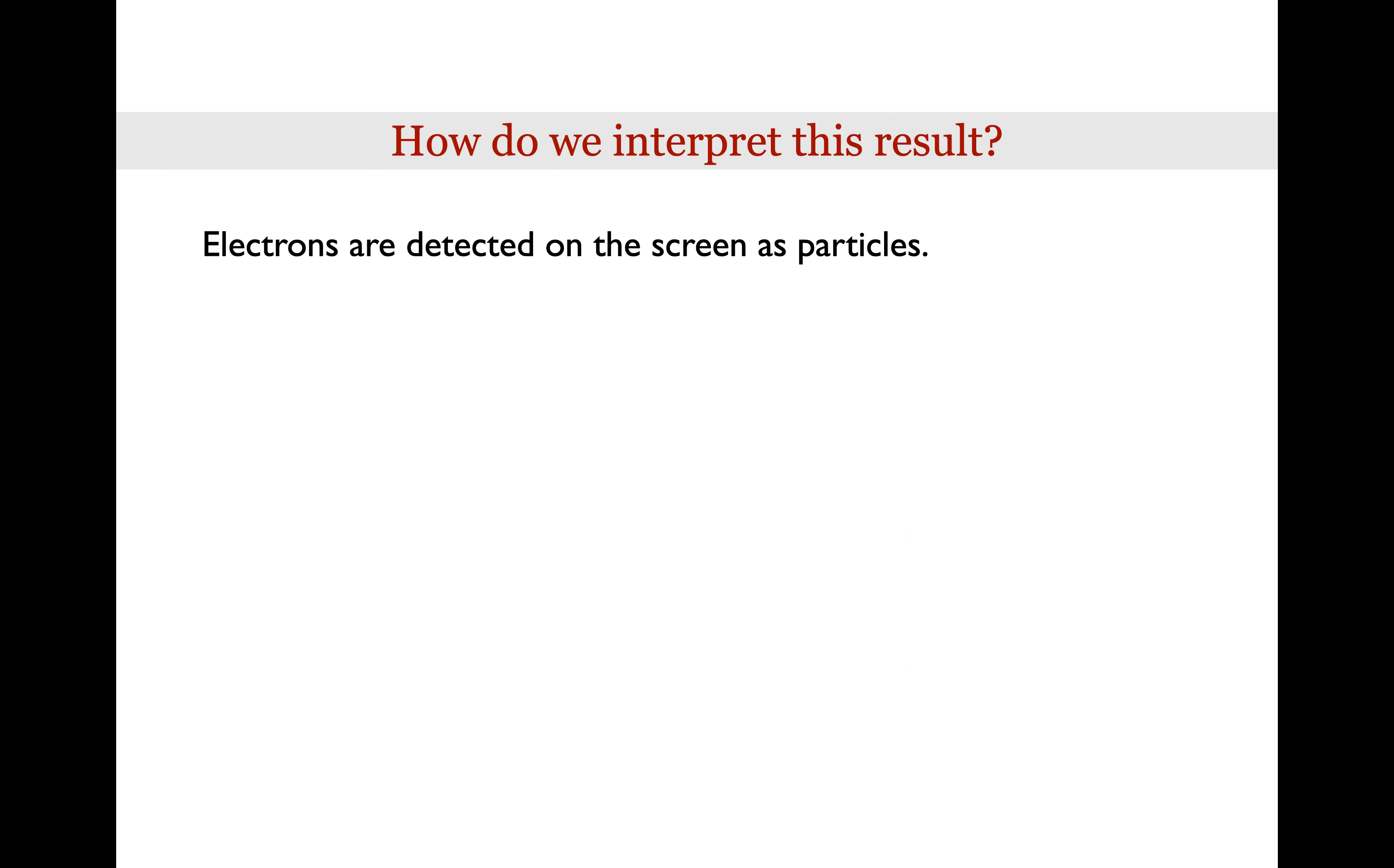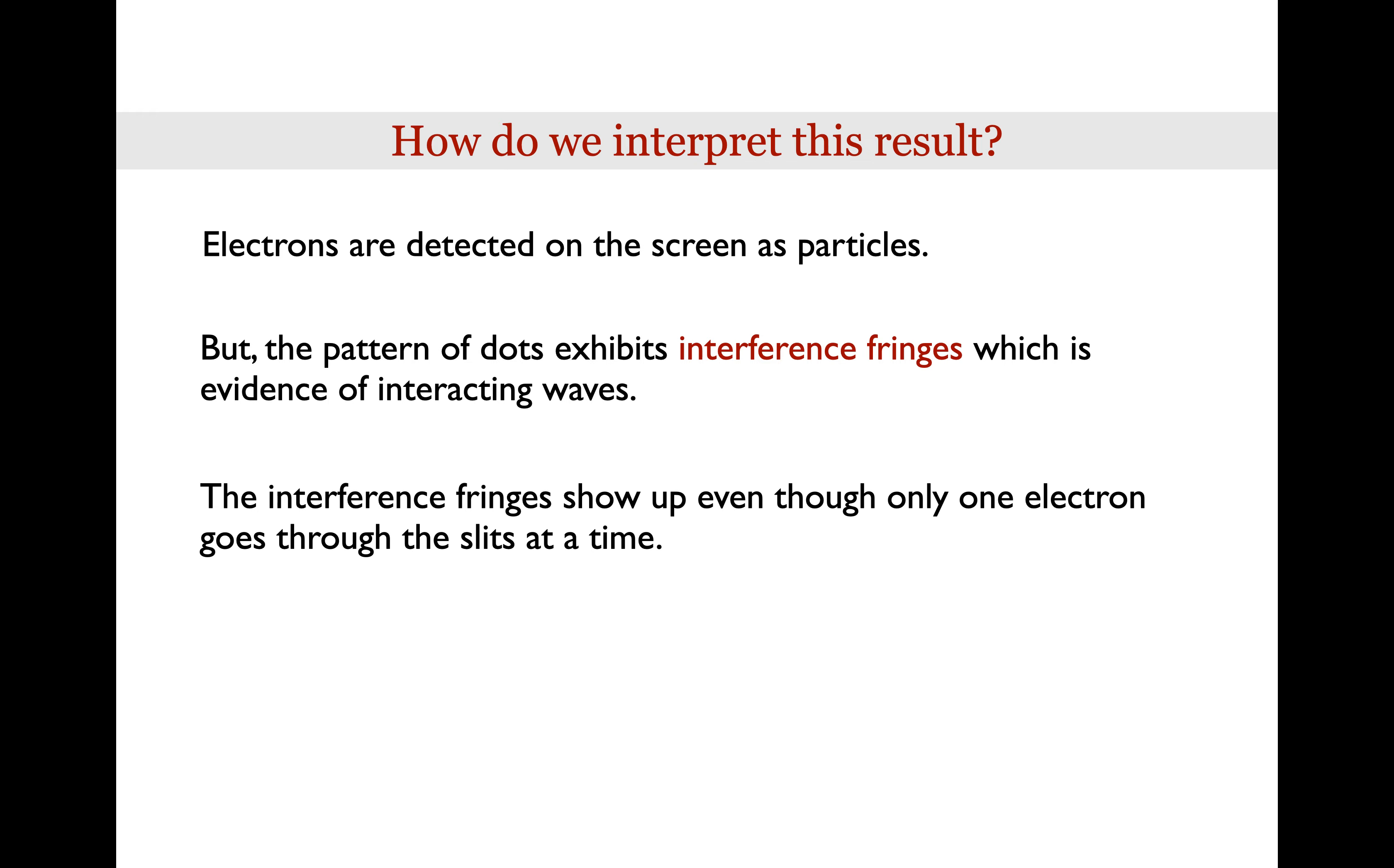So in summary, how do we interpret the results of the double slit experiment with electrons? Electrons are detected on the screen as particles, so that means that they're showing up as points on the screen. But the pattern of dots exhibits interference fringes, which is evidence of interacting waves. The interference fringes show up even though only one electron goes through the slit at a time.